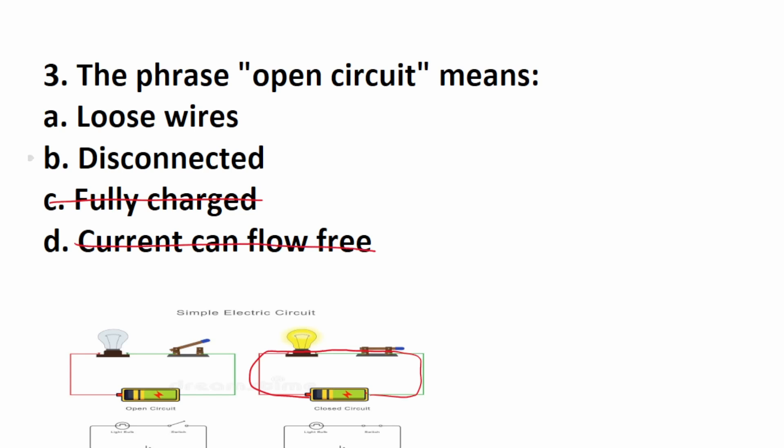So in a closed circuit, current can flow freely. So that's not correct. What about disconnected or loose wires? Wires can be loose and still be connected. If we look at an example of a simple circuit that's open, you can see that this switch is open, which means it's disconnected. So the most accurate answer to this one is B, disconnected.